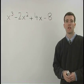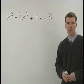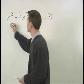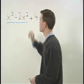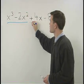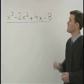The way you do it is by grouping terms together. If we group the first two terms together, x cubed minus 2x squared, and the last two terms together, positive 4x minus 8.